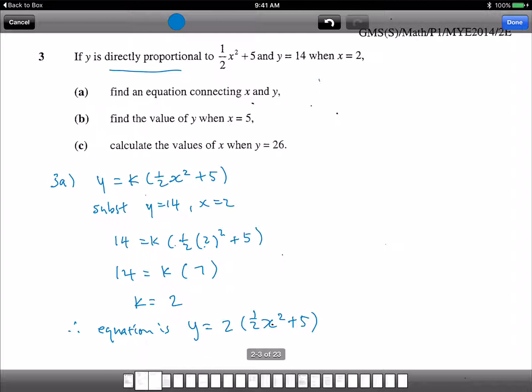Part B, we do here. Find the value of y when x equals to 5. Just substitute x equals to 5. So we get y equals to 5 squared plus 5. 5 squared is 25. So half of 25. Half of 25 is 12.5 plus 5. 2 times of 17.5. So that is 35. That's part B.